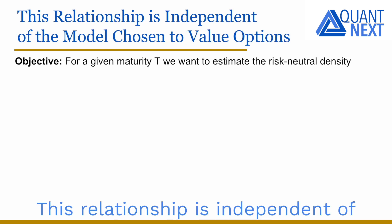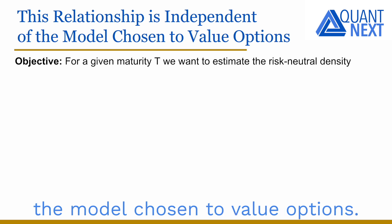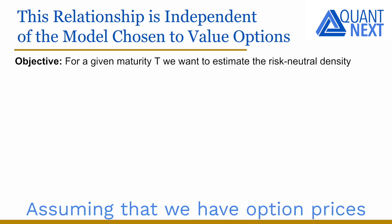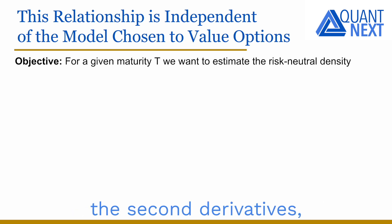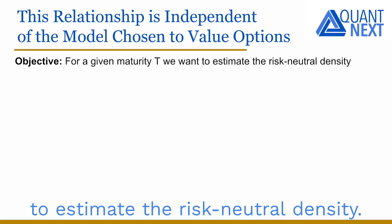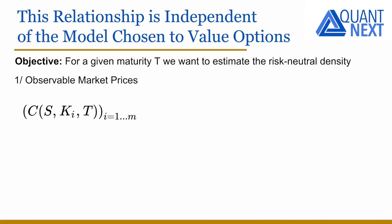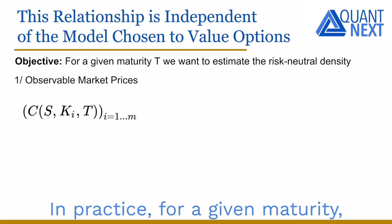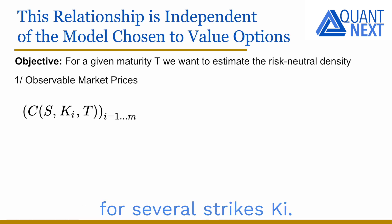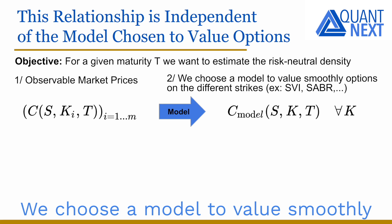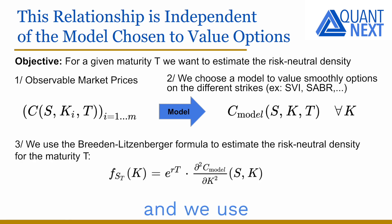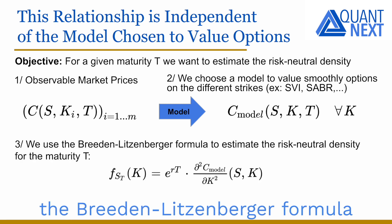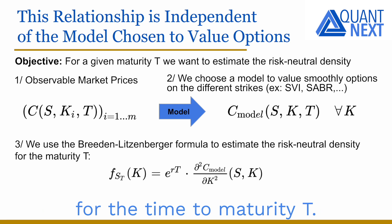This relationship is independent of the model chosen to value options. Assuming that we have option prices for different strikes and are able to calculate the second derivatives, we can use it directly to estimate the risk-neutral density. In practice, for a given maturity T, we have several observable market prices for several strikes K. We choose a model to smoothly value options across different strikes — such as SVI or SABR — and we use the Breeden-Litzenberger formula to estimate the risk-neutral density for the time to maturity T.